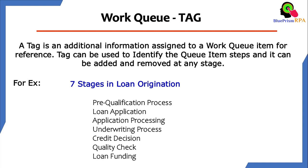Once the Loan Application part is completed, that step will move further to Application Processing. You will remove that tag from that specific item and add a new tag — Application Processing. After that it will go to Underwriting Processing, removing the older tag and adding Underwriting Processing. Step by step it will move further through Quality Check and Loan Funding, meaning the loan has been given to the person who required it.